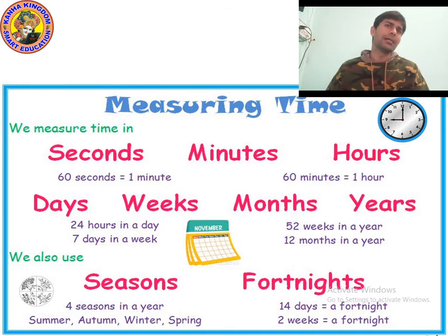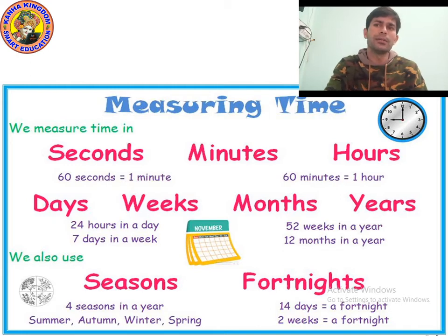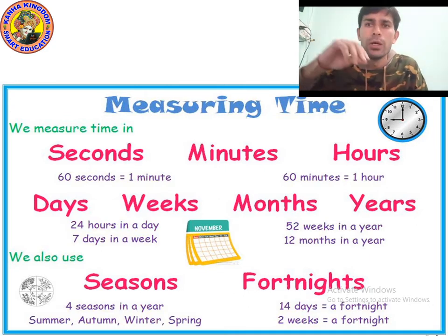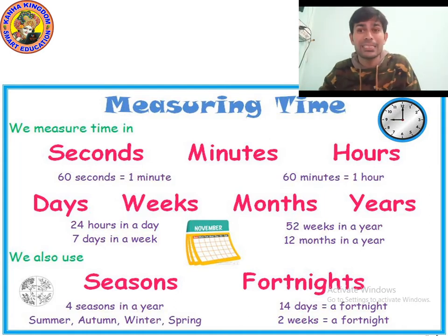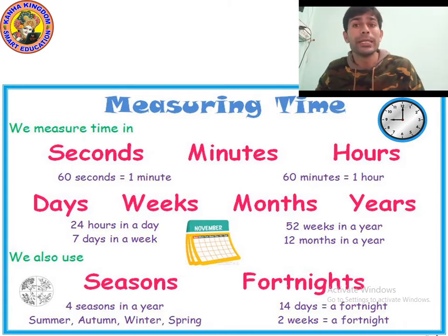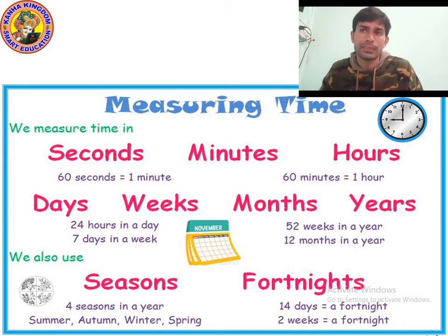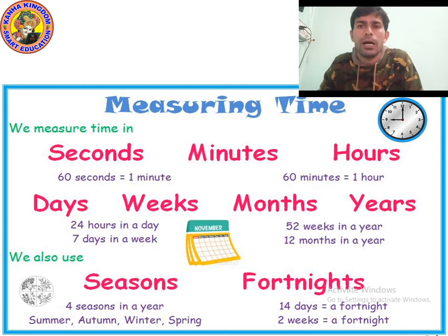If I ask you: how many fortnights are there in 42 days? The answer is three fortnights. Another question: how many minutes are there in three hours? Since one hour equals 60 minutes, three hours equals 180 minutes.